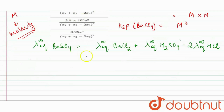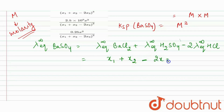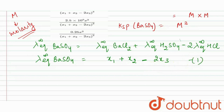Substituting the values, the equivalent conductivity at infinite dilution for BaSO₄ equals x1 plus x2 minus 2x3. Let's call this our first equation.